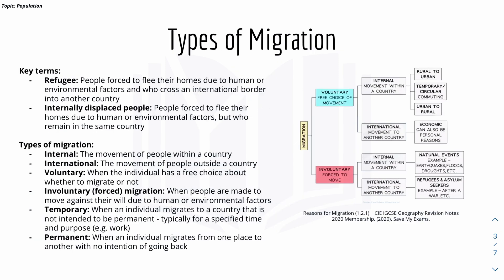There are types of migration to look into, along with key terms such as refugee and internally displaced people. Types of migration include internal — the movement of people within a country, for example from one state to another — and international, which is movement of people outside the country. There's also voluntary migration, where people have free choice, and involuntary, which is forced migration.